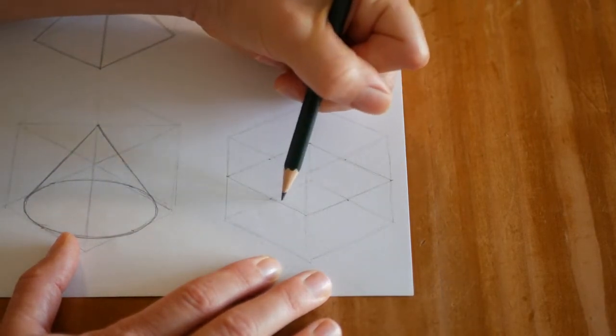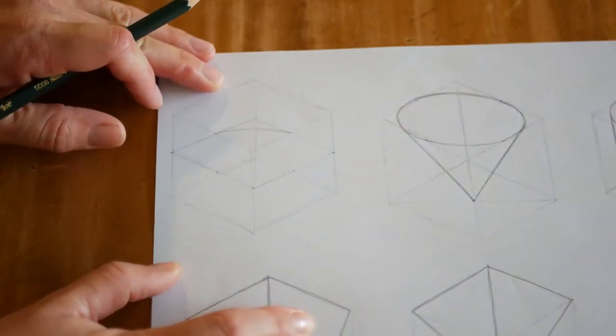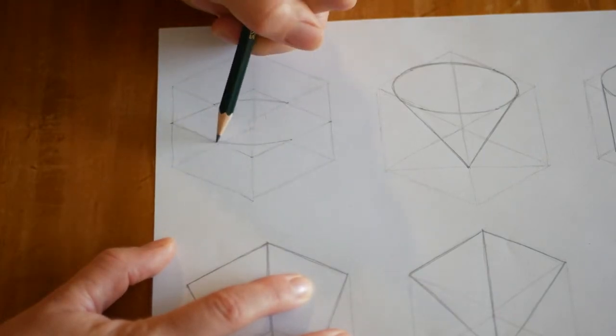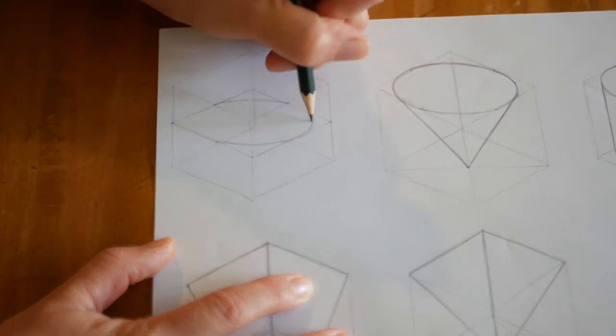We're going to draw our ellipse. So again, we have our flat top and bottom, and we have our curved left and right edges.